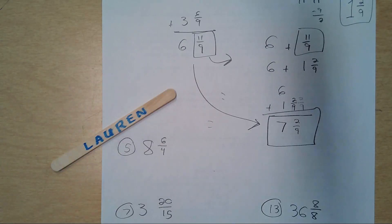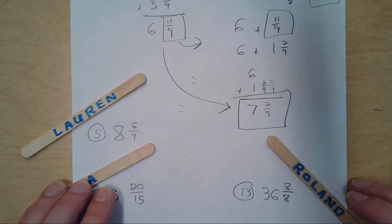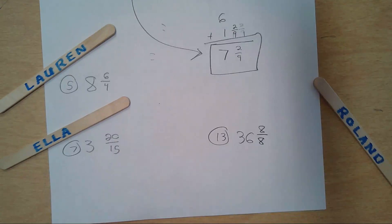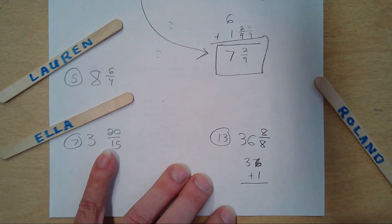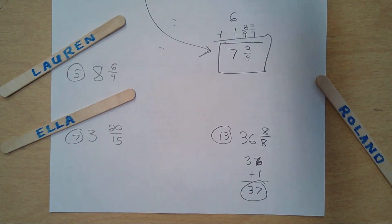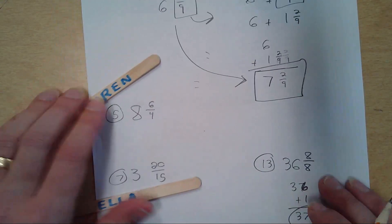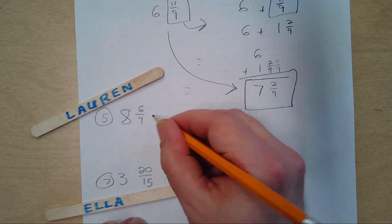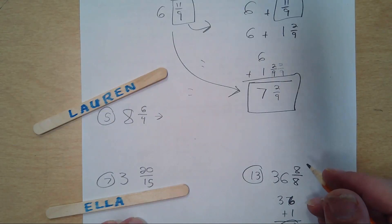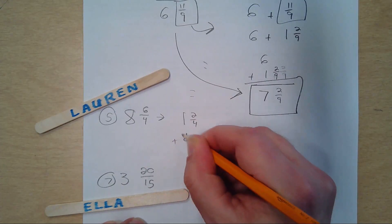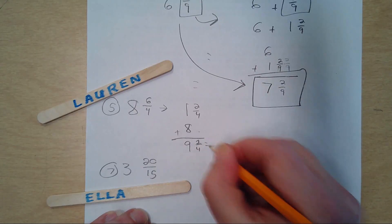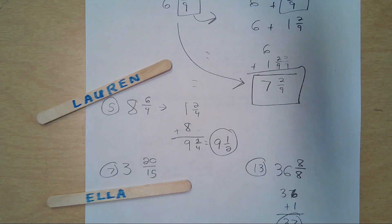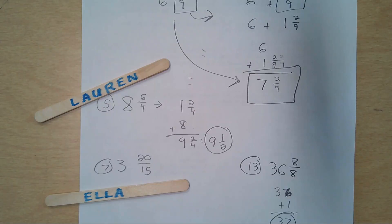Number 5 will be for Lauren, 7 will be for Ella, 13 will be for Roland. Roland: 36 and 8 eighths — 8 eighths is the same as 1, so just add 1. Final answer: 37. You don't need a fraction there at all. Lauren: 6 fourths becomes 1 and 2 fourths — add that together and simplify. That's 9 and 1 half. So 9 and 2 fourths, then she simplified — you probably saw the 2 fourths and got right there. 9 and 1 half is where we want to be.